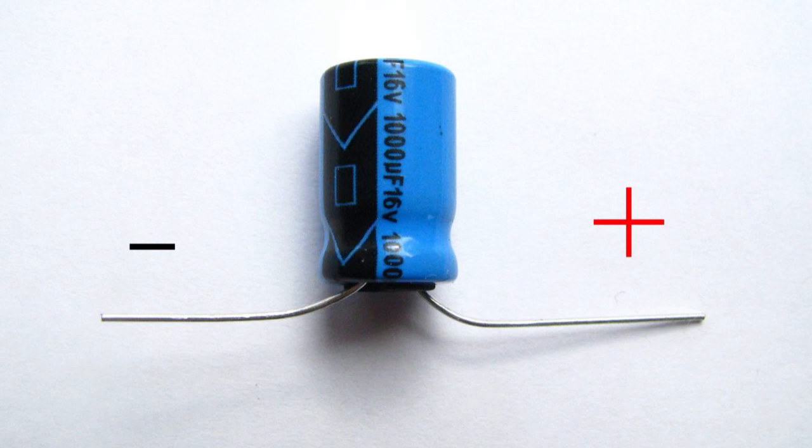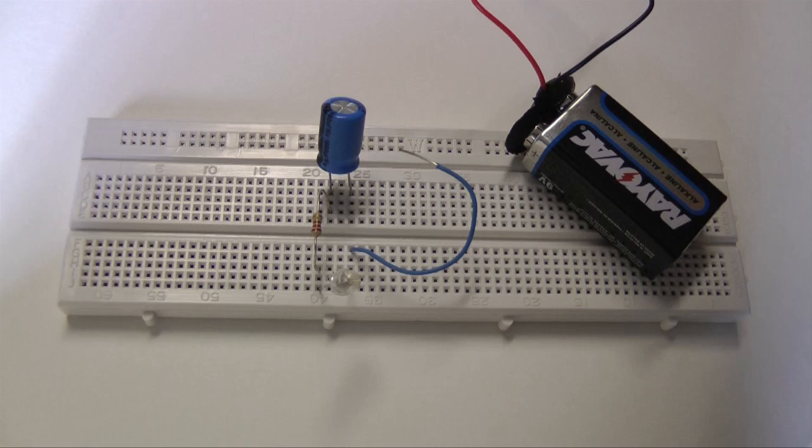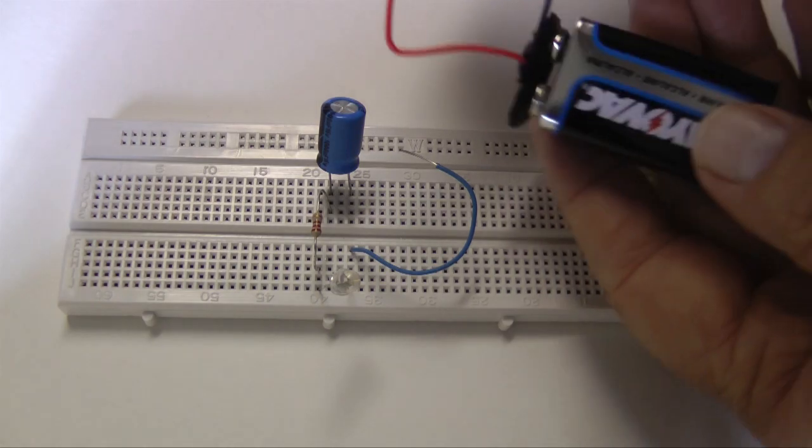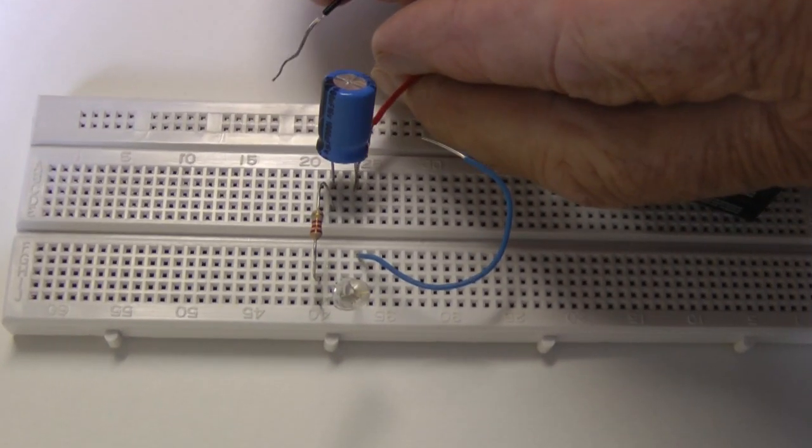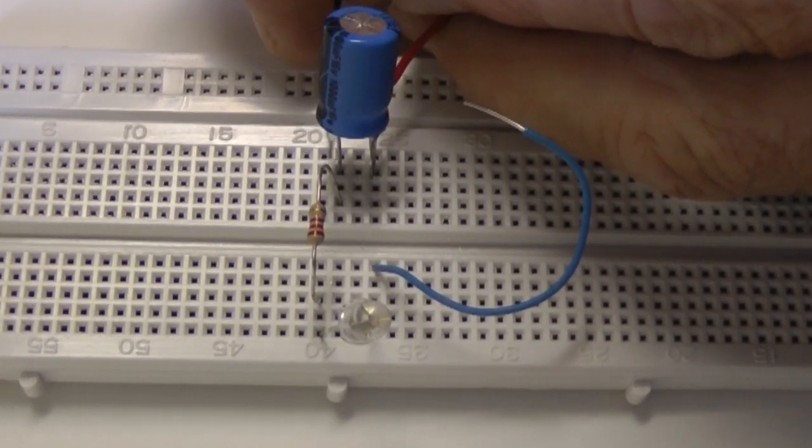To charge this capacitor, we connect it to a power supply. In this case, a 9-volt battery. If you're not familiar with the board I'm using, check out our video on electronic breadboards. Briefly touching the leads of the battery to the capacitor, plus to plus, minus to minus, creates an electrostatic charge in the capacitor.